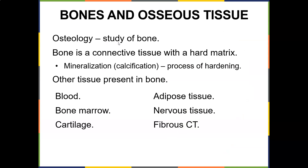What is osteology? That's the study of bone — 'osteo' means bone, 'logy' means study. Bone is connective tissue with a hard matrix; mineralization is the process of hardening. Other tissues present in bone include blood, bone marrow, cartilage, adipose tissue, nervous tissue, and fibrous connective tissue.